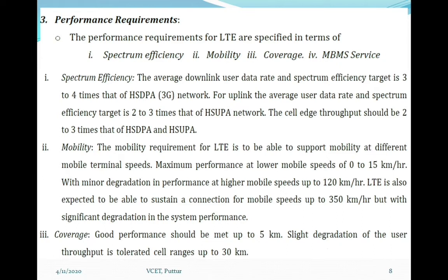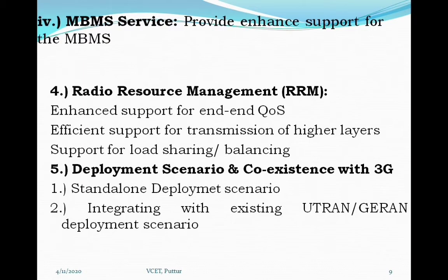For coverage, the full performance target should be met up to 5 km. For cell ranges up to 30 km, a slight degradation in user throughput is tolerated, and a more significant degradation in spectrum efficiency is also acceptable, but the mobility requirement must still be met. Cell ranges up to 100 km should not be precluded by the specifications. LTE should also provide enhanced support for multimedia broadcast and multicast service, MBMS, compared to UTRA operation.